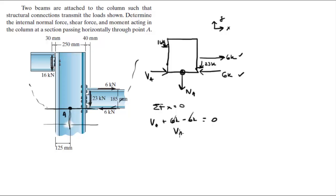Going down we got negative 16k up here minus 23k right here, and I assumed NA was going down, so it's minus NA equals zero. You're gonna get that NA, the normal at A, is equal to negative 39k.